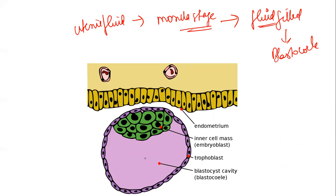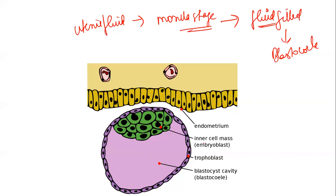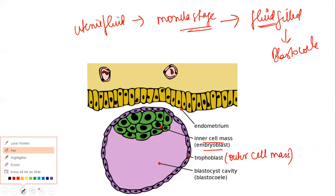As the fluid accumulates in the blastocele, the blastomeres — the cells making up the zygote — get arranged into two layers: an inner cell mass and an outer cell mass. The outer cell mass is called the trophoblast, which helps in implantation. The inner cell mass is called the embryoblast.